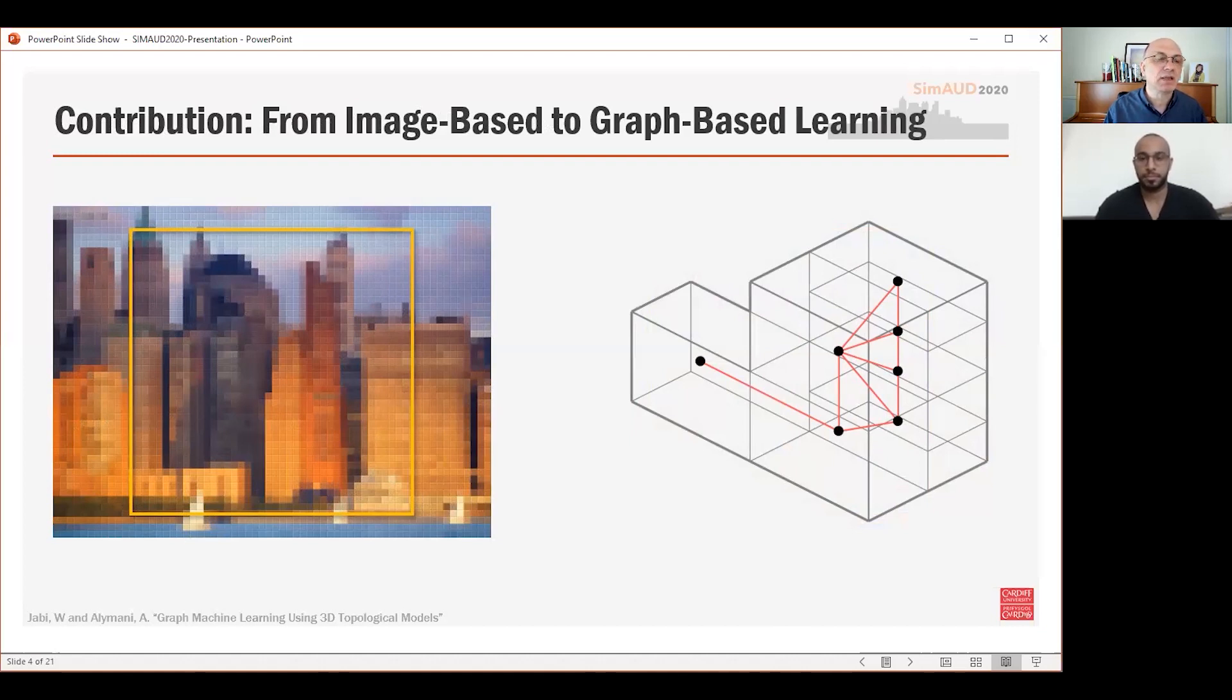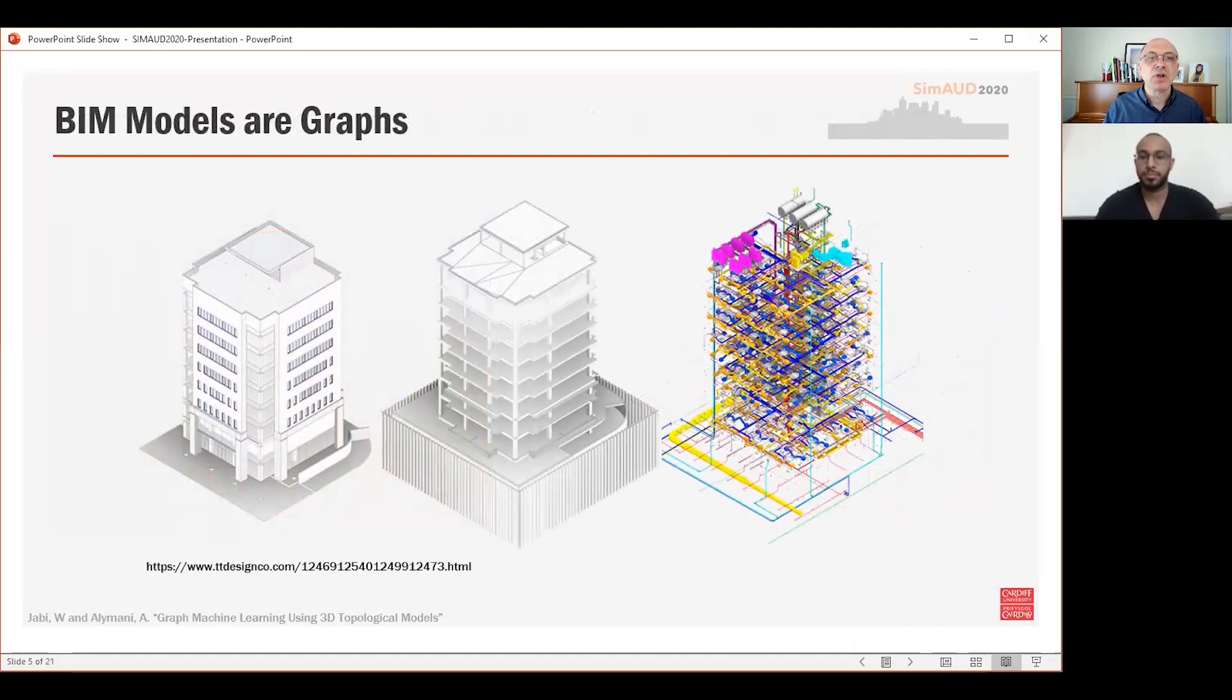We wanted to search for a better and more semantically rich approach. So we focused on a branch of machine learning called graph machine learning. Very briefly, on a conceptual level, graphs are made of vertices or nodes that are topologically connected through edges. Vertices and edges can be labeled and can carry additional information.